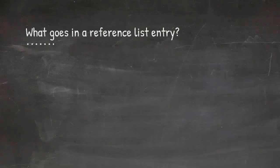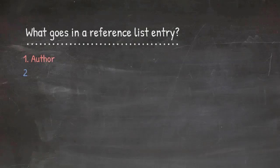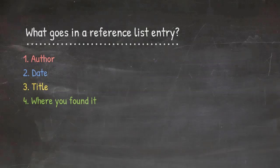With reference list citations, all the information about the publication you need to identify and cite it properly is right here: it's the author, the date, the title, and the source information for retrieval. This is the order that it comes in your reference list as well.